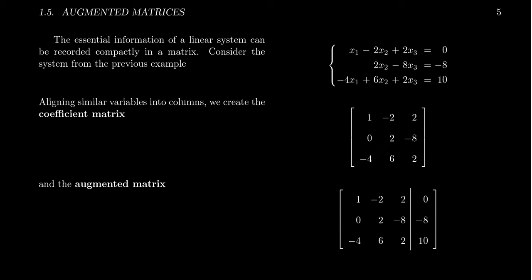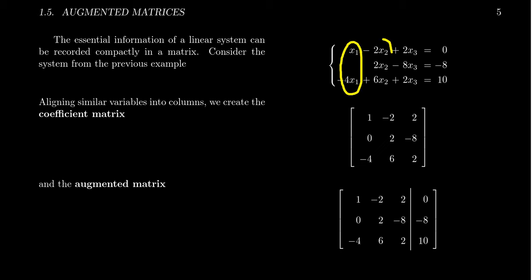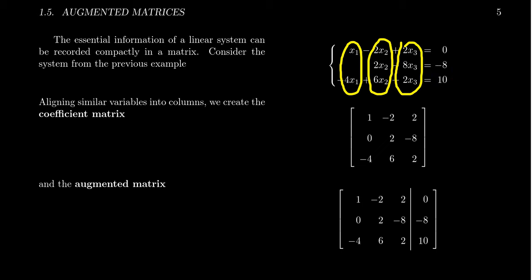The reason we're introducing matrices now is that we want to talk about the coefficient and augmented matrix of a system of equations. Given a linear system, if you organize things correctly you put all the variables lined up into columns — a column for x1, a column for x2, a column for x3 — with all constant terms on the right-hand side.